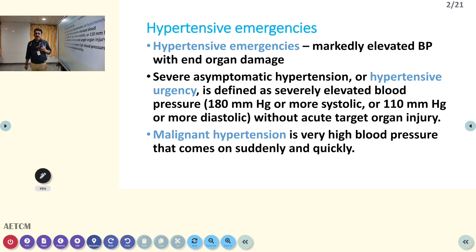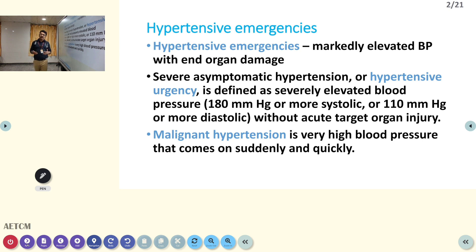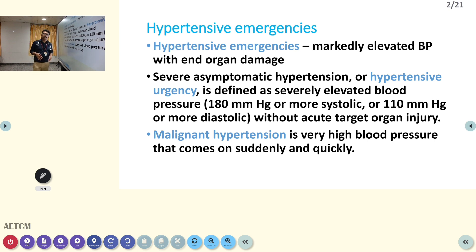Hypertensive emergency means very high BP with end organ damage. It can be pulmonary edema, cardiac failure, renal failure, or encephalopathy. Severe asymptomatic hypertension, or hypertensive urgency, means BP is very high and the patient can develop end organ damage anytime, but it may not always be evident — that also sometimes becomes hypertensive urgency.